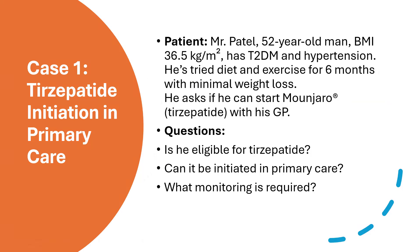Case scenario one deals with tirzepatide initiation in primary care. Mr. Patel is a 52-year-old man with a BMI of 36.5, type 2 diabetes, and hypertension. He has tried diet and exercise for nearly six months with minimal weight loss and is asking if he can start tirzepatide with his GP. The questions are: is he eligible, can it be initiated in primary care, and what monitoring is required?